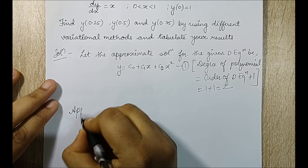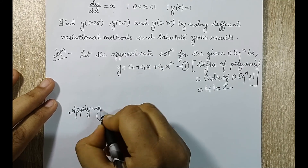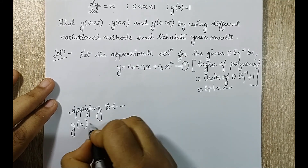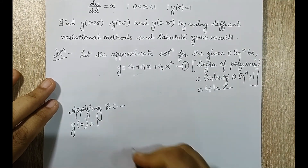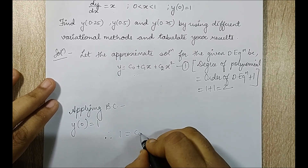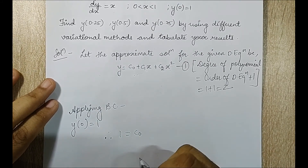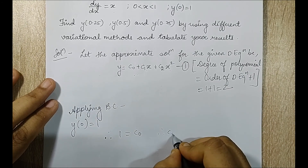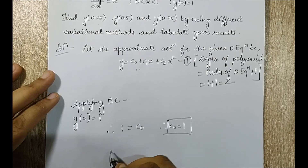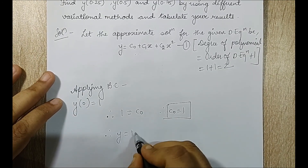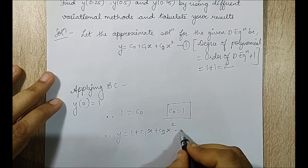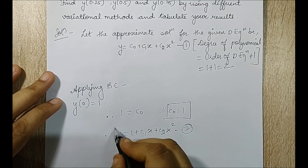Next I will apply the boundary conditions to find whatever constant values I can find. The only boundary condition given is y(0) = 1. When I substitute in equation 1, therefore 1 = c0 and the rest of the terms become 0. Therefore c0 = 1. When I substitute this in equation 1, I get y = 1 + c1*x + c2*x², which is equation 2.